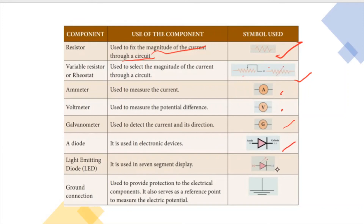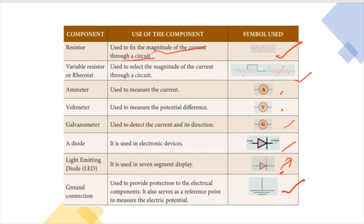A light emitting diode (LED) is represented with two arrow marks along with the diode symbol. Ground connection is also shown, which is used to provide protection to electrical components. There are many electrical symbols available in your textbook for reference.